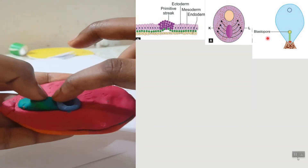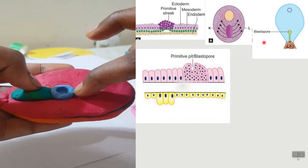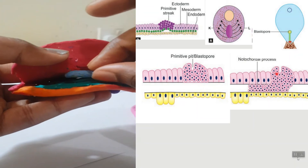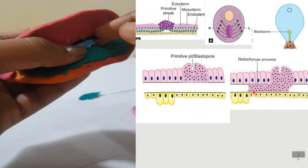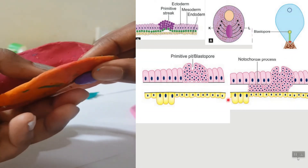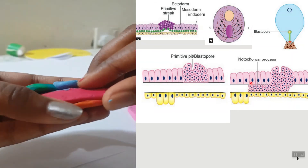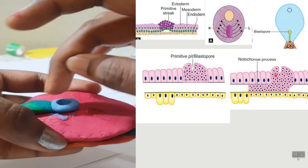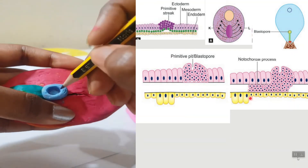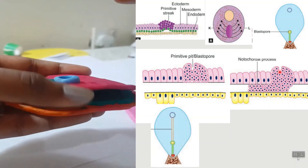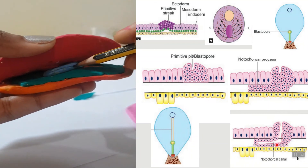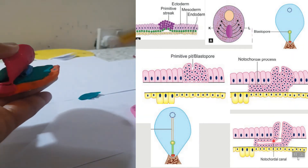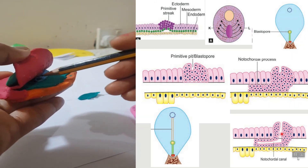From the primitive node, cells will proliferate downwards between the layers, extending till the tail end of the prochordal plate — this forms the notochordal process. Additionally, the blastopore opens through inside, and these cells proliferate to form a canal within the notochordal process — that canal is called the notochordal canal.